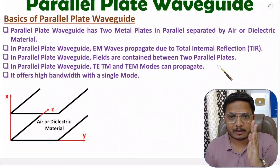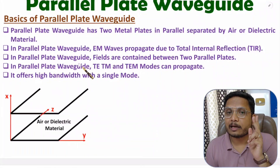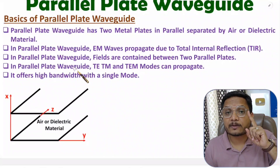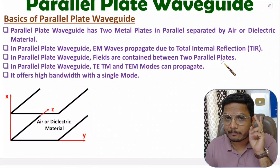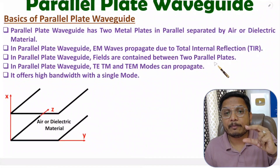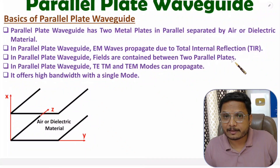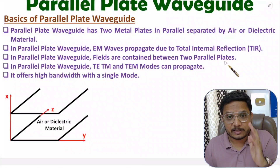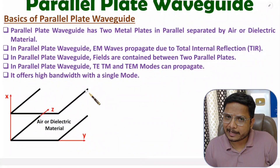In terms of structure, there is a similarity between parallel plate waveguide and microstrip antenna. In microstrip antenna, electromagnetic waves are radiated in space because of fringing — so fields are not contained between the two plates. While in parallel plate waveguide, electric field and magnetic field are bounded in between the two parallel metal plates. In terms of structure, both structures are identical.